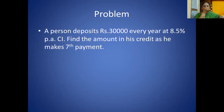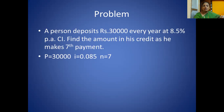Problem 3: A person deposits rupees 30,000 every year at 8.5% per annum compound interest. Find the amount in his credit as he makes the 7th payment. P = 30,000, i = 8.5% = 0.085, n = 7. Formula: P × [(1 + i)^n − 1] ÷ i.